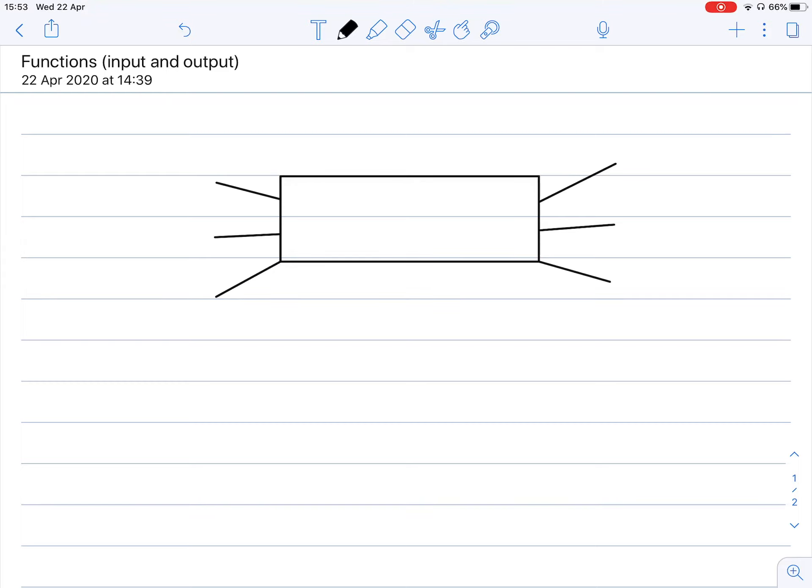So on the left hand side, we have what's called our input values. On the right, we've got our output. We normally refer to input as our x values. Can differ, but most commonly are x values.